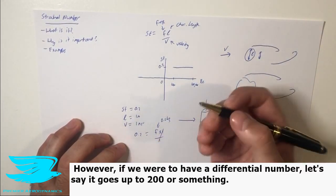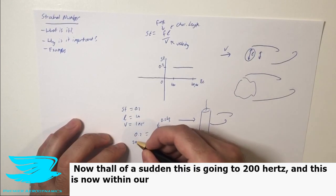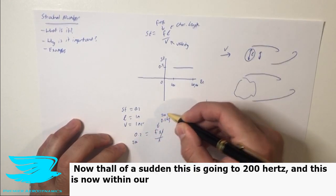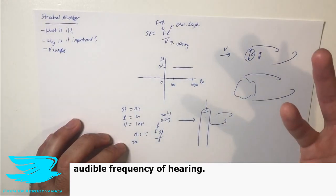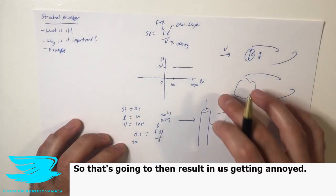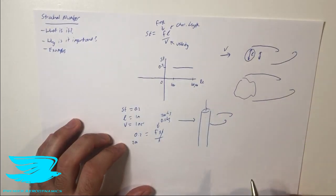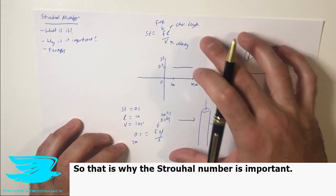However, if we were to have a different number, let's say, it goes up to 200 or something. Now, all of a sudden, this goes to 200 hertz, and this is now within our audible frequency of hearing. So that's going to then result in us getting annoyed. So that is the Strouhal number, and why is it important?